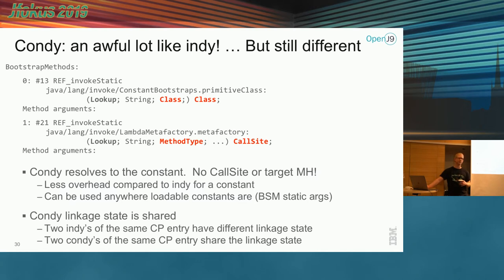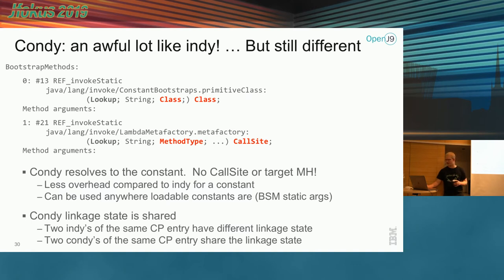The thing you return is either the constant — in my example it turns out to be a class — or the call site in the case of invoke dynamic. Condi resolves to the constant directly, so we've removed two levels of indirection. Another interesting thing with Condi is that it can be used anywhere a loadable constant can be — anywhere you can use LDC. That means I can use Condi as an argument to another Condi, so I can have a set of constant dynamics that feed into another constant dynamic or into an invoke dynamic, building up additional levels of dynamics from my constant pool. The Condi linkage state is shared — there's a single constant pool entry, and once it's resolved all references to that Condi share that resolution state. That's another difference from invoke dynamic.